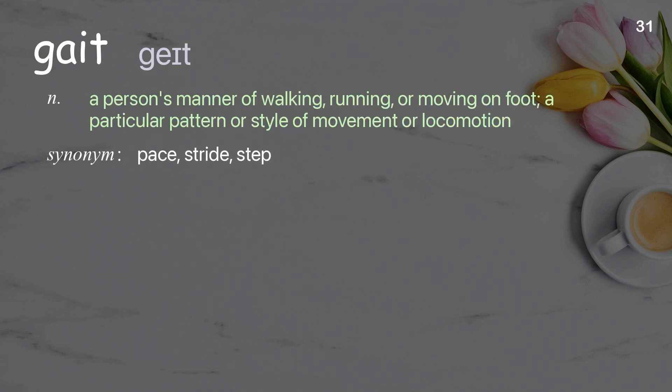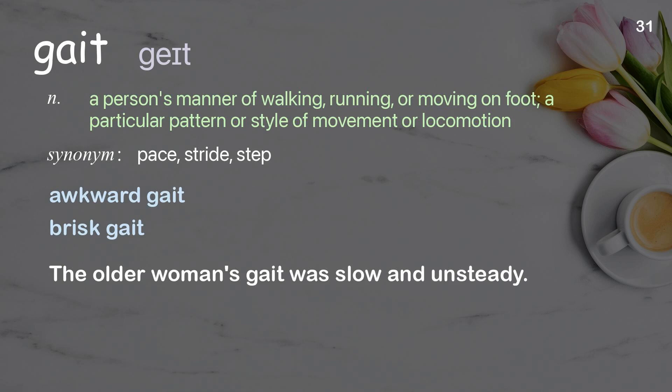Gait: a person's manner of walking, running or moving on foot; a particular pattern or style of movement or locomotion. Examples: awkward gait, brisk gait. The older woman's gait was slow and unsteady.